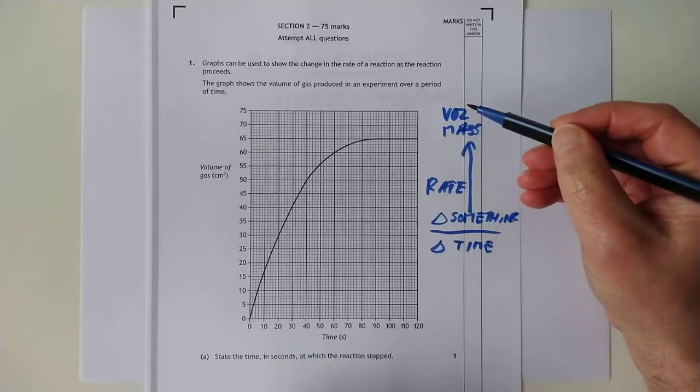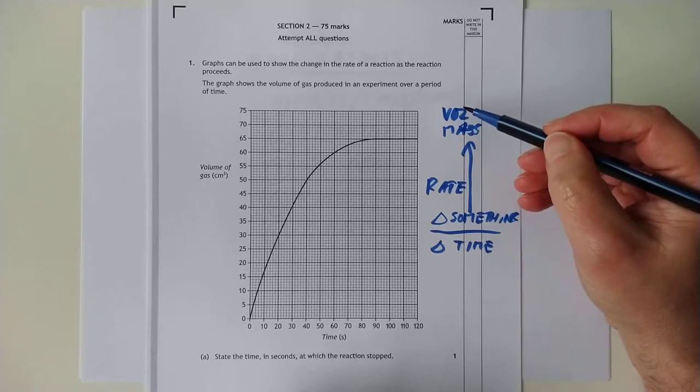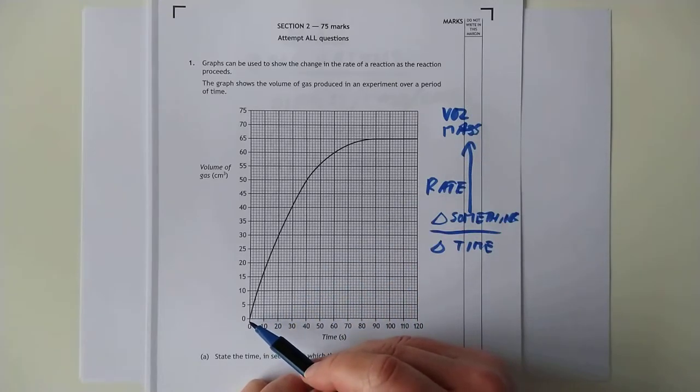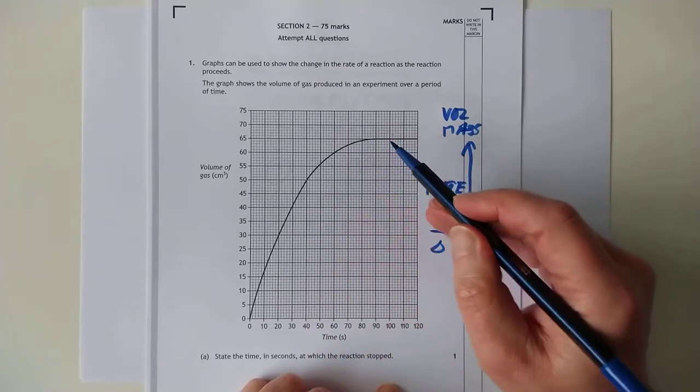If, for example, you were collecting the gas produced during a reaction, just like this one, then you will start at zero, of course, because you don't have any gases at the start, and you end up making gas and it flattens off.